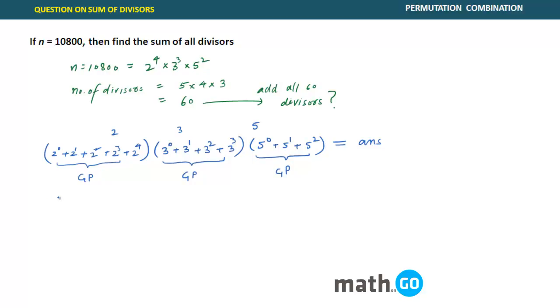So it has how many terms? 5 terms, first term being 1. 2 raised to power 0 is nothing but 1. You will say 2 raised to power 5 minus 1 by 2 minus 1, into how many terms are there?